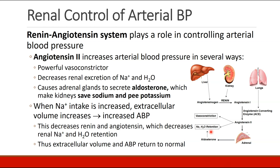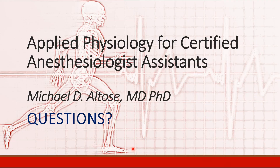When sodium intake is increased and extracellular volume increases — because water follows sodium — blood pressure increases. High blood pressure will then decrease renin, decrease angiotensinogen conversion, decrease aldosterone, cause you to stop retaining salt and water, and you will have diuresis and natriuresis, returning volume and blood pressure back to normal. That's the end of the discussion about blood pressure. In the next section, we'll talk about some pathophysiology. Thank you.